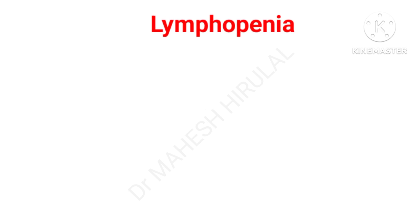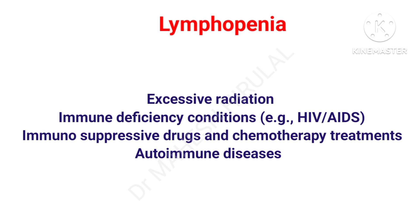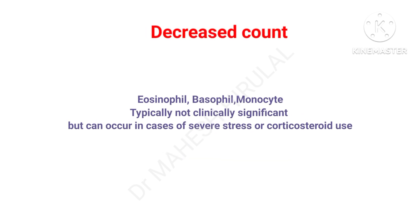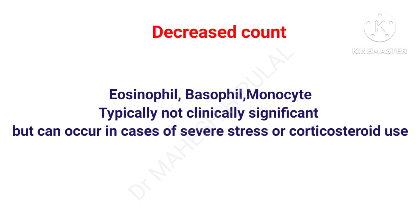Reduced count of lymphocytes is called lymphopenia, which can be seen in excessive radiation, immunodeficiency conditions, immunosuppressive drugs, chemotherapy treatments, and some specific autoimmune disorders. Reduced numbers of eosinophils, basophils, and monocytes typically do not carry clinical significance, but can be seen in some cases of severe stress or excessive use of corticosteroids.